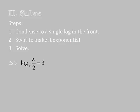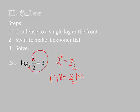Look at example three. Condense it. Well, I don't need to condense it. I only have one log in the problem. Then I need to swirl. So I start with the base, and I swirl. So I get 2 to the third equals x over 2. Then I solve it. 2 to the third is 2 times 2 times 2, which is 8, equals x over 2. Multiply both sides by 2, and x is 16. I've solved a logarithm.